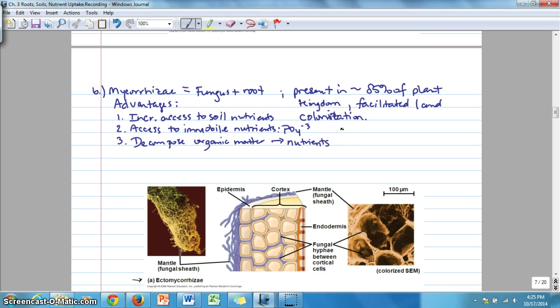So decomposing organic matter to make nutrients available. So we're going to look at two different types of mycorrhizae. One type here that's shown is ectomycorrhizae.